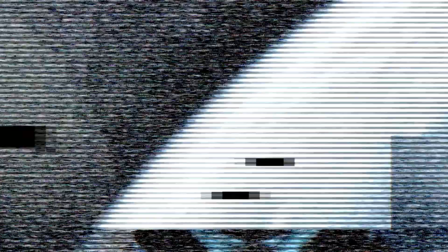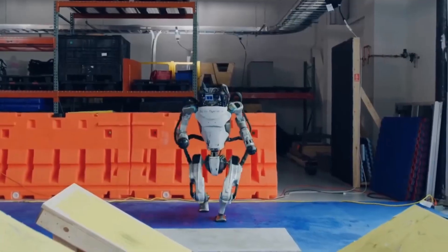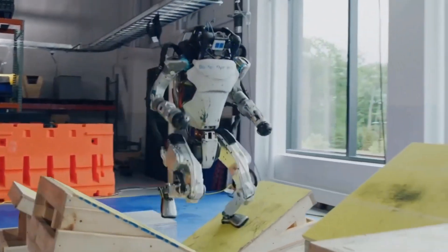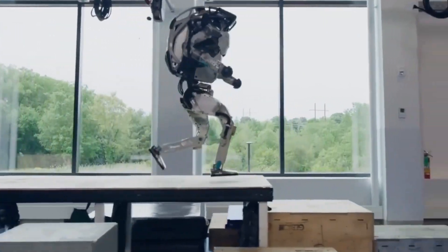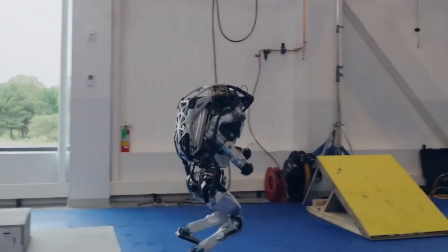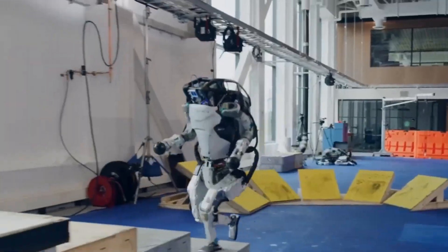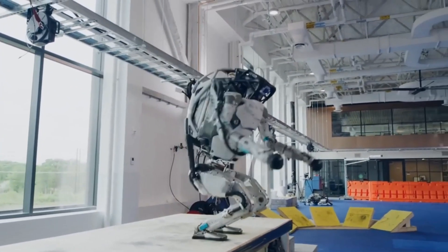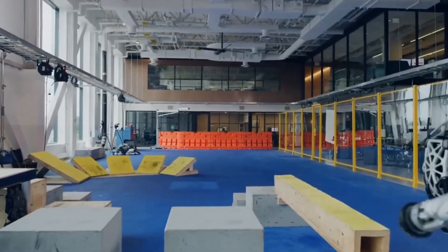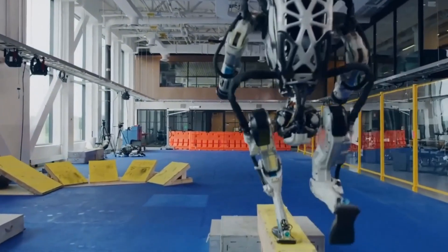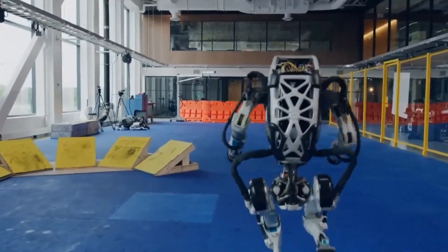Wondering where Optimus could make a real impact? Well, the possibilities are enormous. Let's talk about manufacturing. Optimus is like a superhero on the assembly line. It can put together intricate machines, handle delicate materials, and even double-check quality, all thanks to its clever combo of skills. Picture Optimus working right alongside you, the human operator, making things happen faster and better.